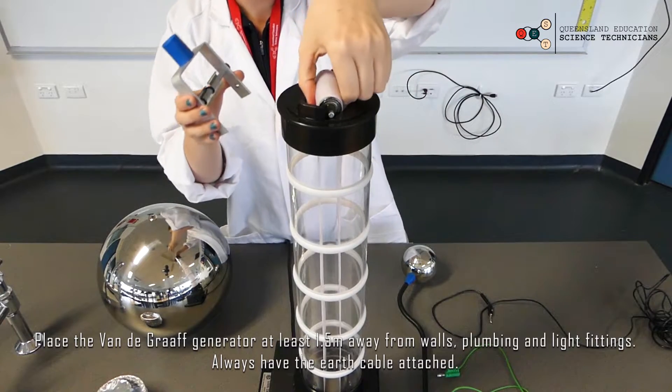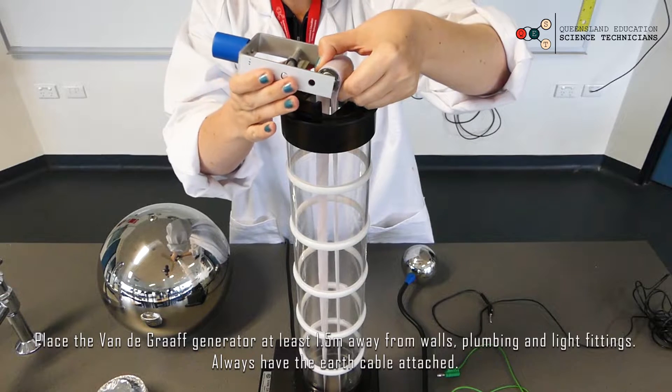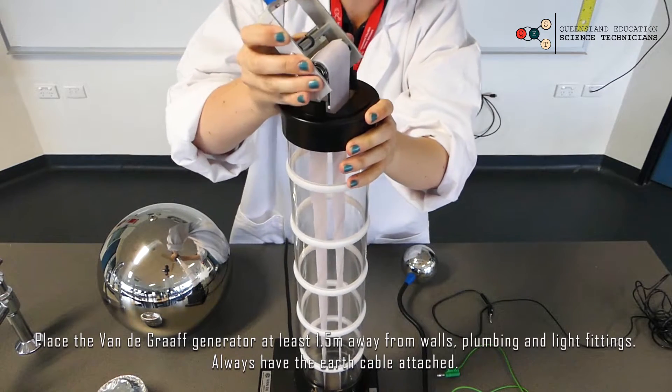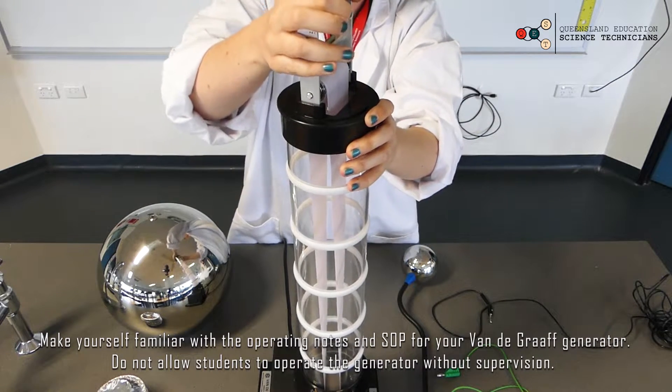So to put the comb back on, pull the belt out of the column, put the two ends through the bracket and then put the whole bracket into the top of the column.